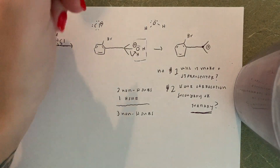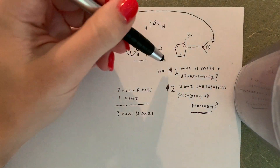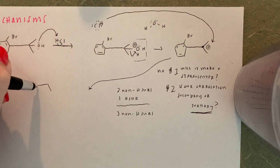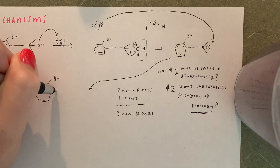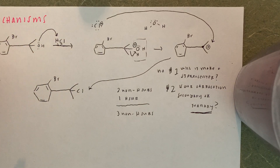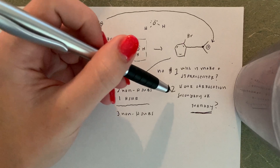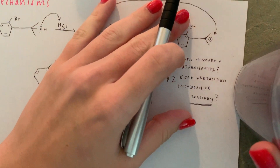We know it will make a stereocenter and our carbocation is already as stable as it can get, so now we're going to add our Cl and put it right there. We redraw the molecule the same way — all we're doing is putting a Cl right there. Your problem changes when you have a stereocenter and a secondary carbocation, which we'll see in the next example.